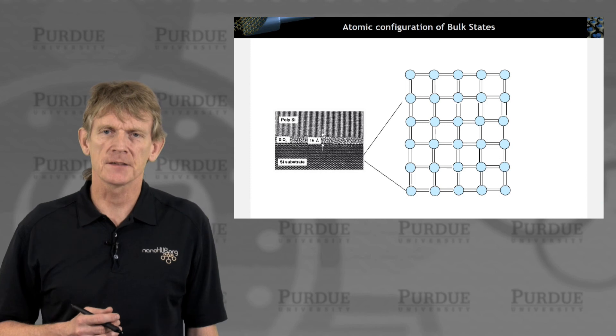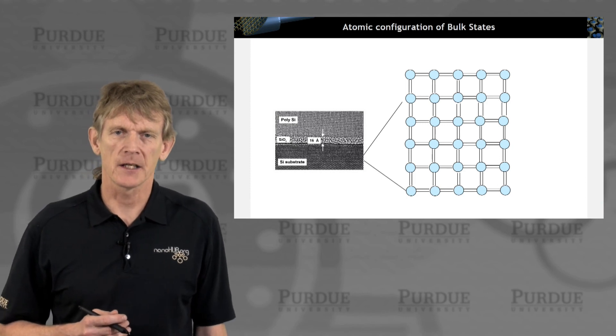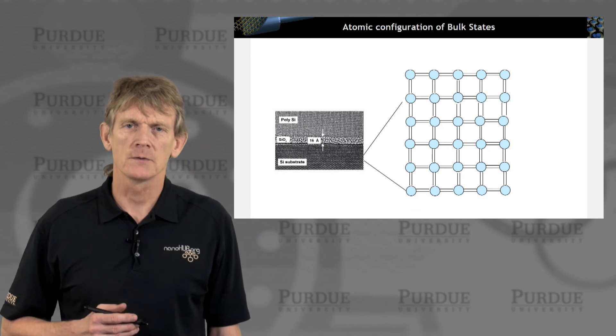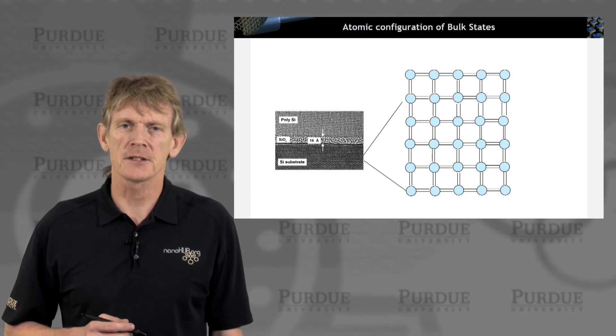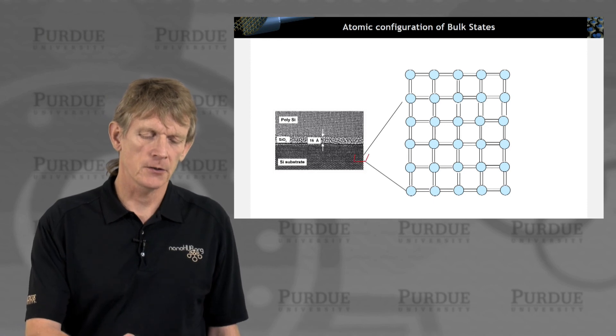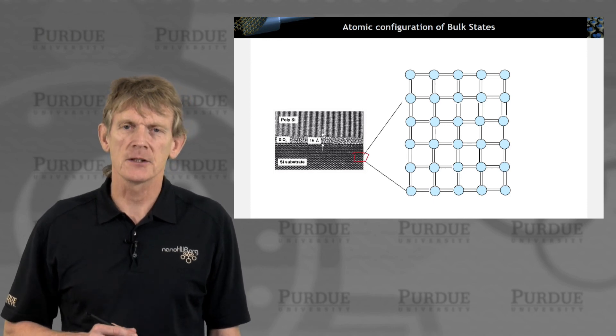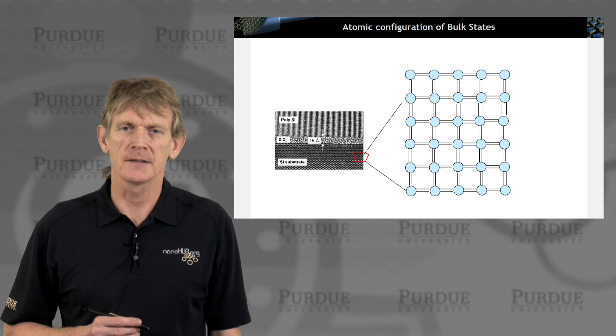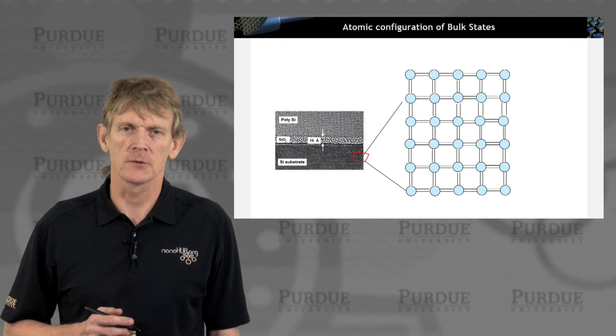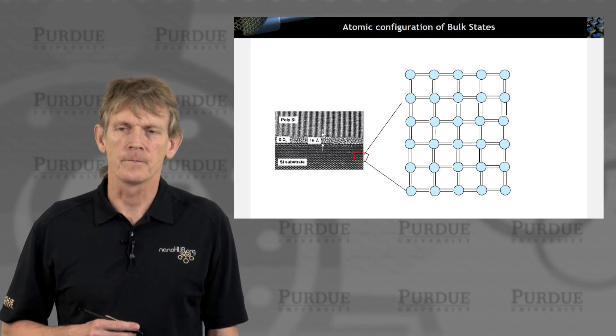Let's look at some of these structures again. This is a plot we had shown in the past. Let's look at an atomic configuration of these bulk states first. We had looked at beautiful crystal structures, we worked on all kinds of crystal symmetries and Brillouin zones, etc.